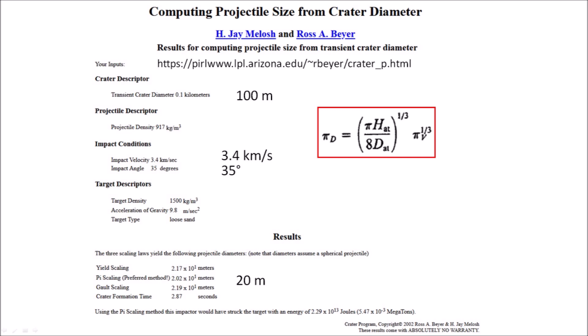The sizes of the ice projectiles can be calculated using a program by Professor Jay Melosh and Ross Bayer that uses yield equations to correlate crater size to projectile diameter. A Carolina Bay with a diameter of 100 meters would have been made by an ice projectile with a diameter of 20 meters, impacting at a 35-degree angle and traveling at 3.4 kilometers per second. In general, the ice projectiles correspond to projectile diameters that are one-fifth of the basin length.